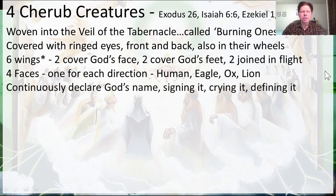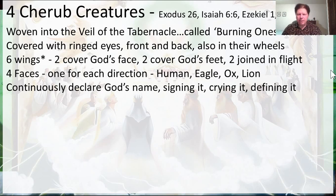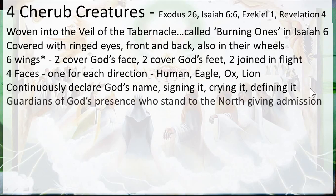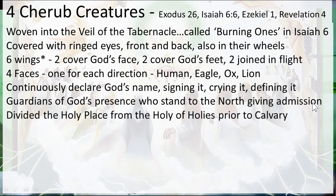These four creatures continuously declare God's name — they sign it with their wings or hands, they cry, and they define it. The point is that God's name is being declared while these creatures are worshiping him. It's almost as if they are God's throne — the four corners of God's throne. God's name is continually before him. They also seem to be the guardians of God's presence, standing to the north giving admission. When the temple veil was rent in two, they now stand to the north — they previously divided the holy place from the holy of holies prior to Calvary, but once the veil was ripped in two, there's only one holy of holies place.